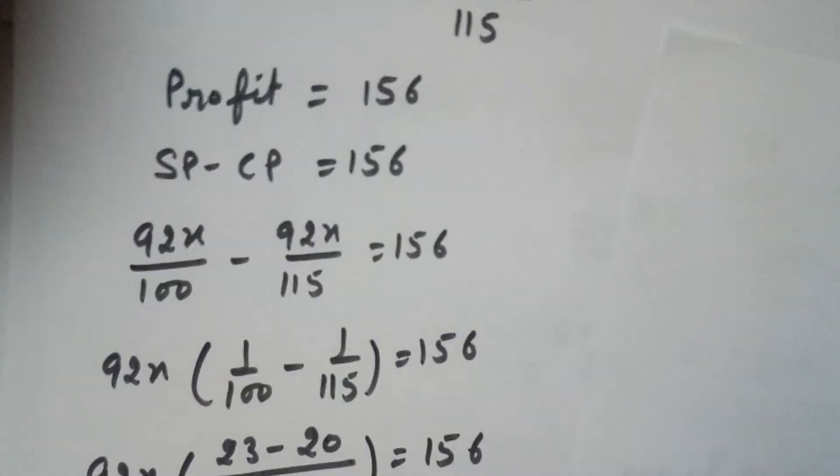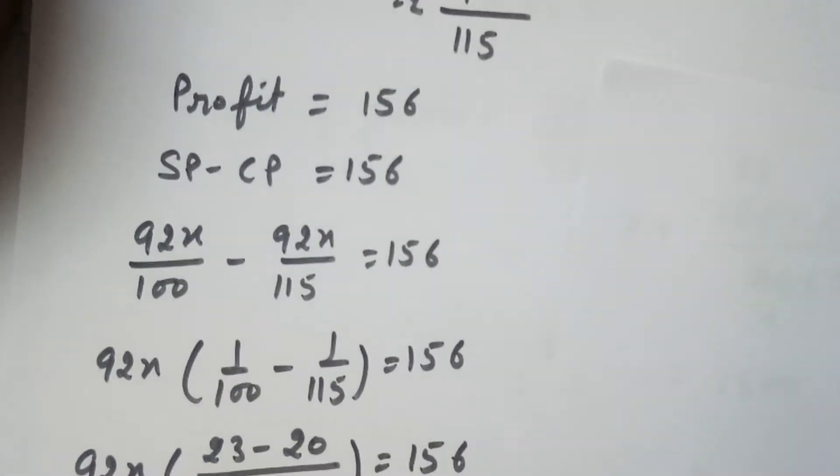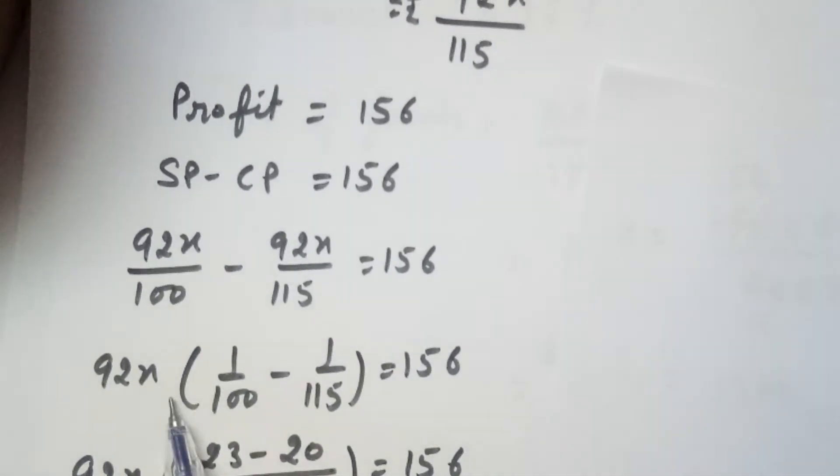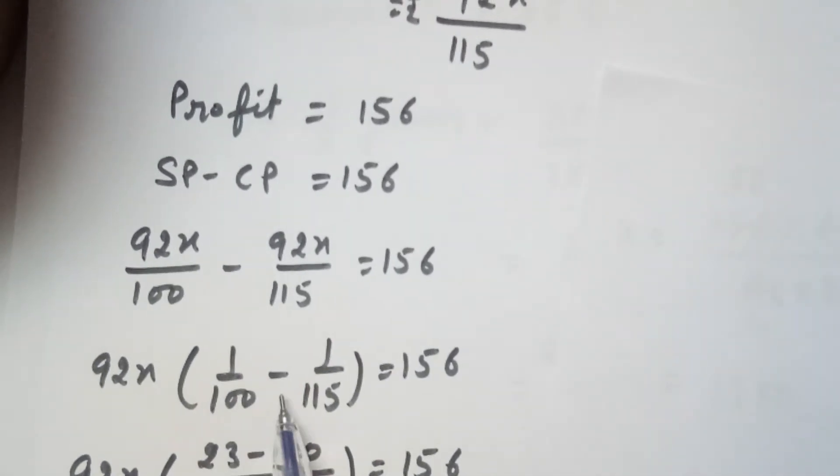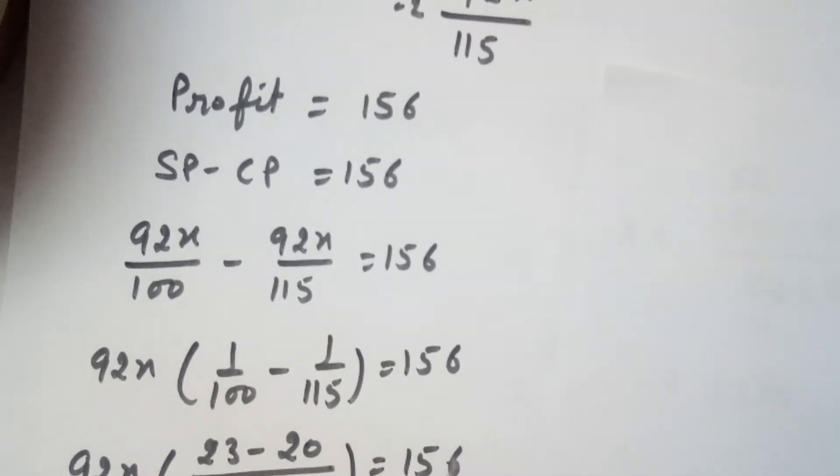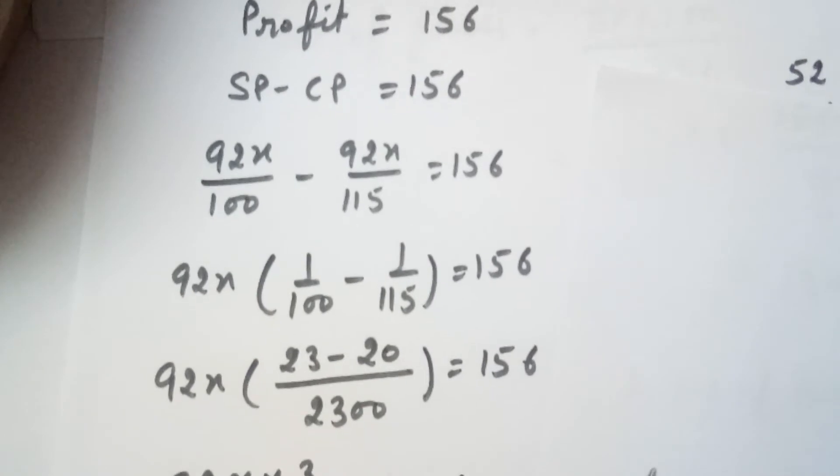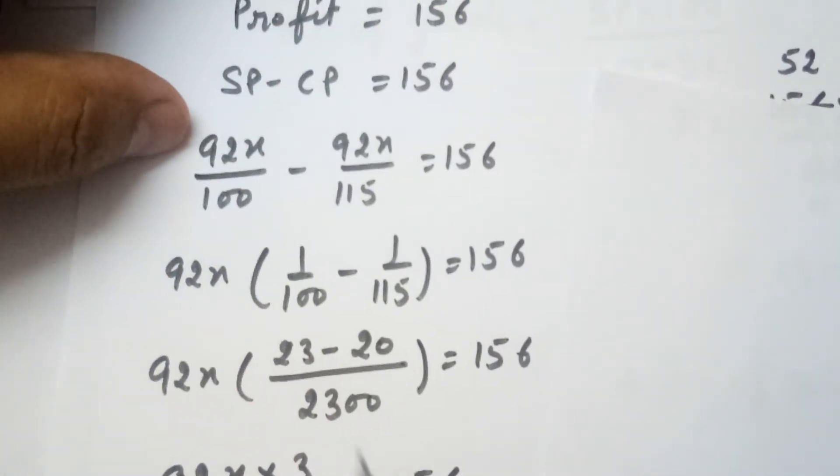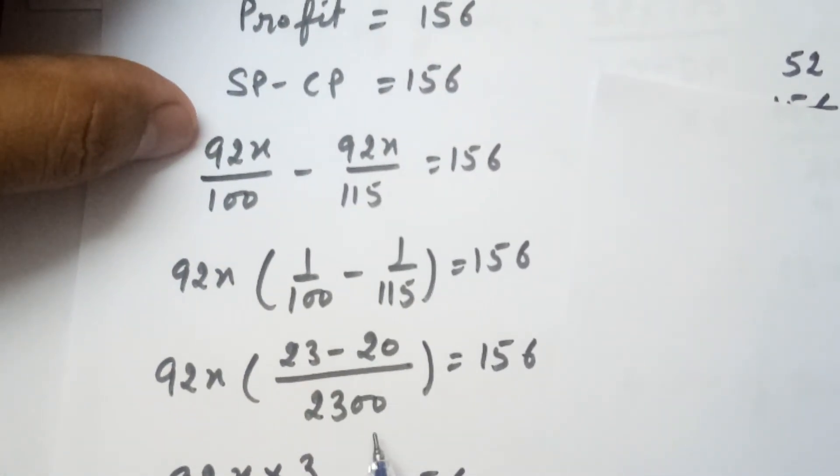So from here what we will do is the calculation. 92X we are taking common so it is 1 by 100 minus 1 upon 115 equals to 156. Now we are taking LCM inside the bracket. So LCM is 2300.